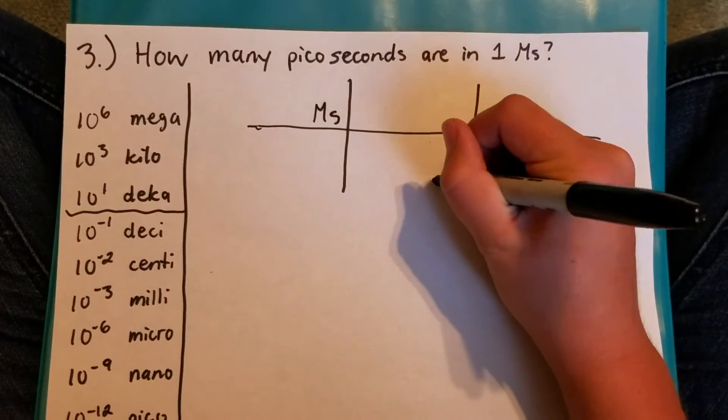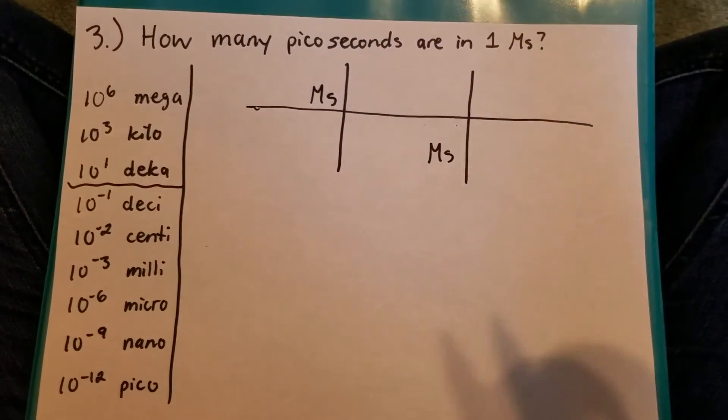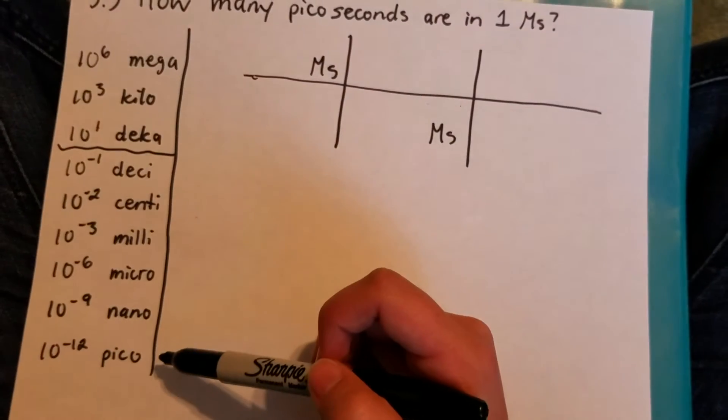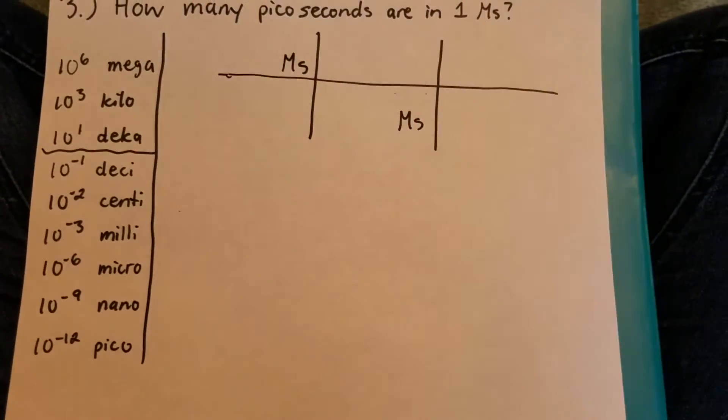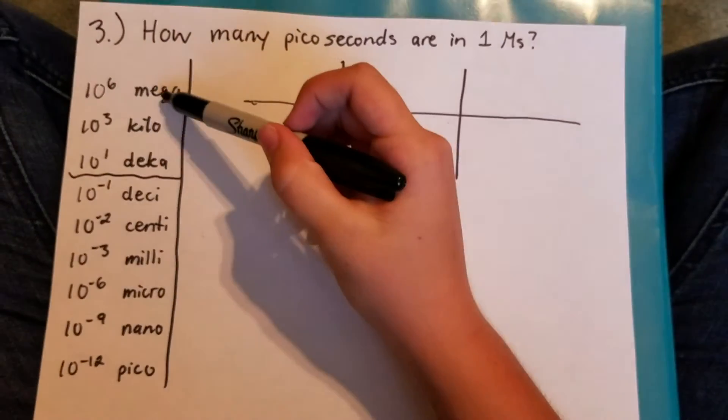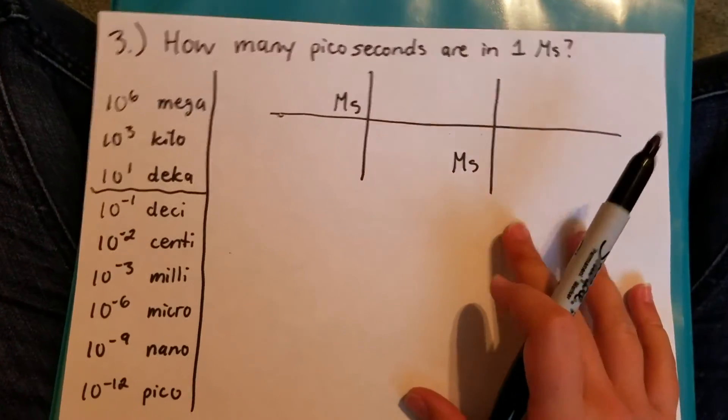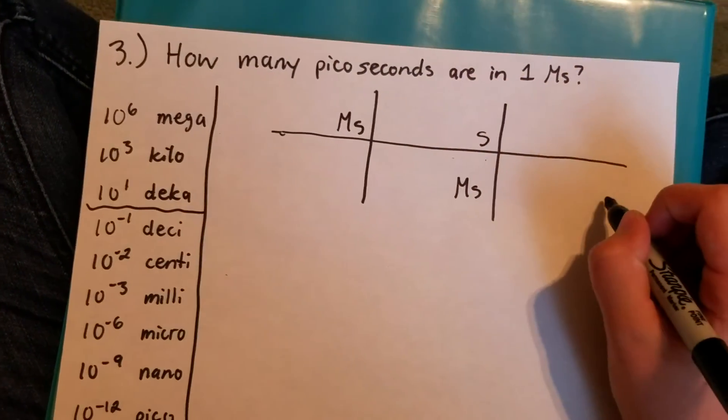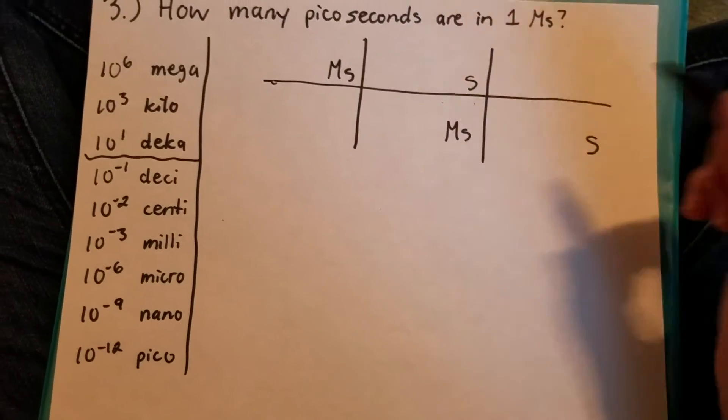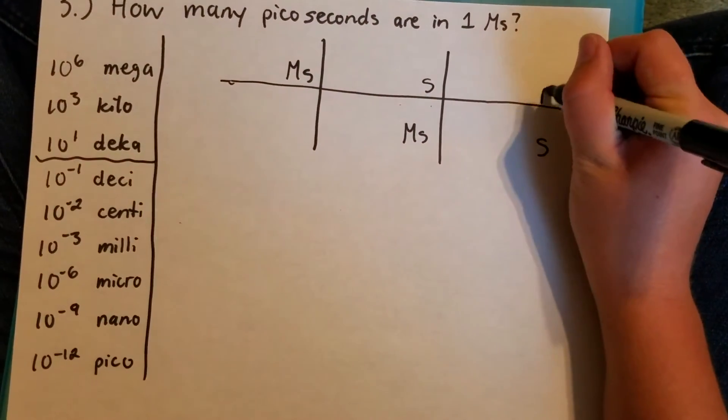And it will also go down in the bottom here so that they'll cancel. Now you can't go straight from mega to pico just like you can't go straight from seconds to hours. So you'll need to go from mega to base and the base is seconds. So seconds will go up here and down here so it'll cancel. And then you'll want to go to picoseconds so those will go up here.